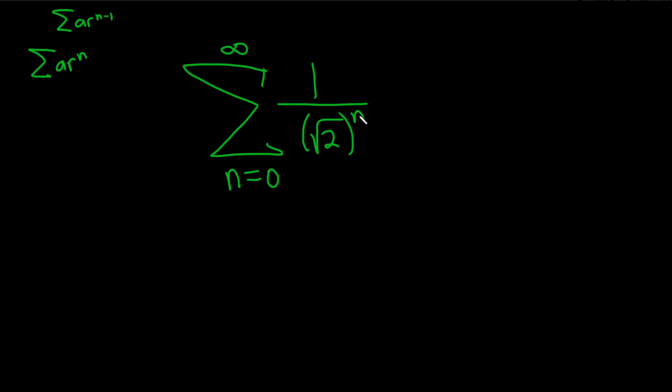So here we have a number raised to a power but we have this 1 here. So let's go ahead and do this: 1 is really 1 to the n. So now we can use properties of exponents to write this as follows.